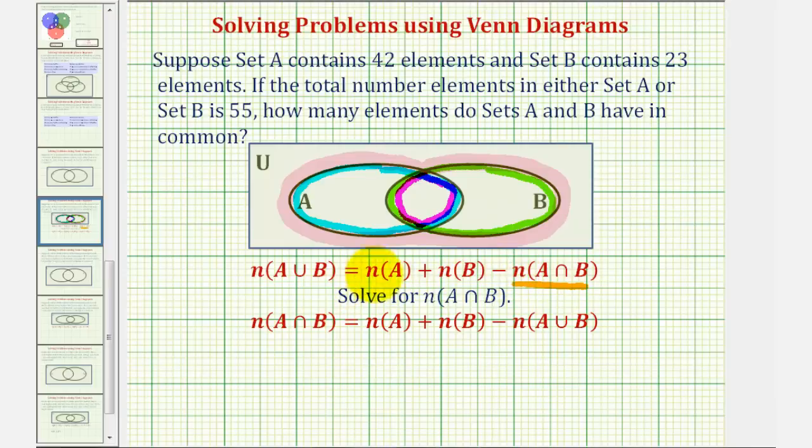So if we solve the equation for the number of elements in A intersect B, we would add this to both sides, giving us this on the left. And then if we subtract the number of elements of A union B on both sides, notice how we'd have minus on the right.